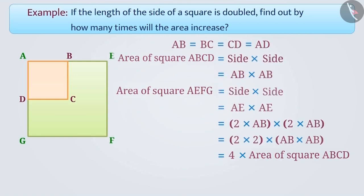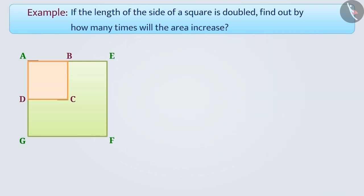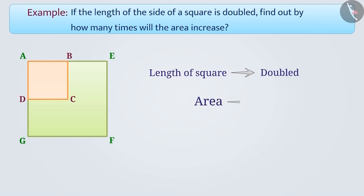That is, when the length of the side of a square is doubled, its area increases by 4 times. This is the answer to the given question.